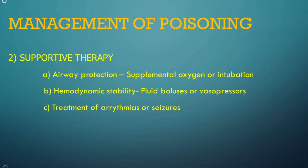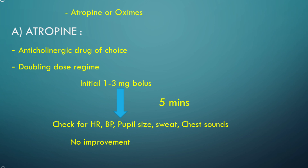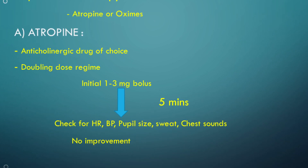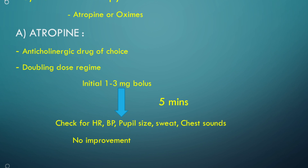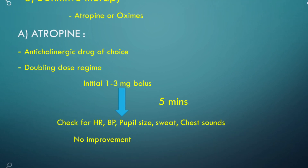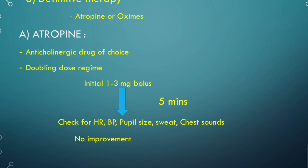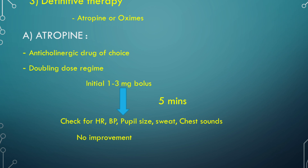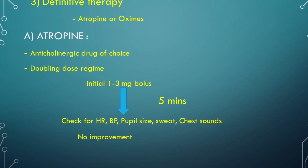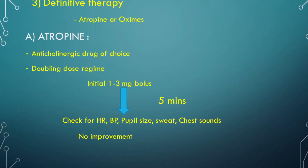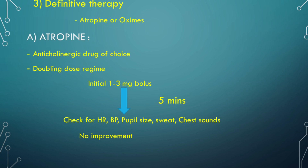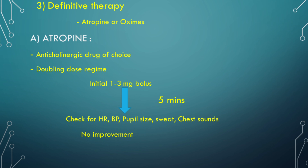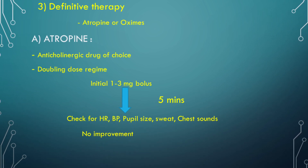Coming to definitive therapy, which includes use of atropine and oximes. Atropine is the anticholinergic drug of choice in OP poisoning. There are variable regimes for doses of atropine, but the most commonly applied regime is the doubling dose regime. In this regime, the initial bolus should be 1–3 mg. After 5 minutes of giving the bolus dose, we should check for heart rate, blood pressure, pupil size, sweating, and chest sounds.